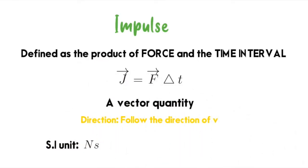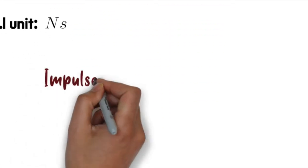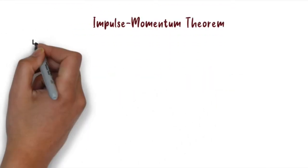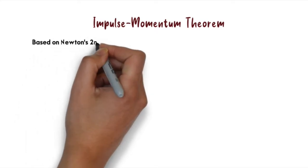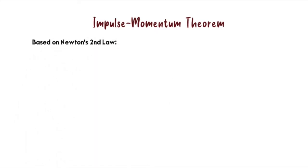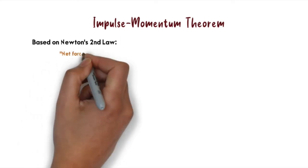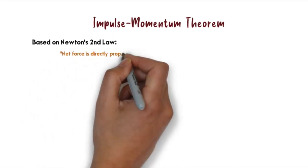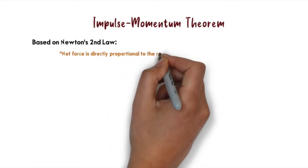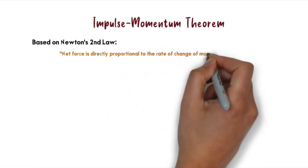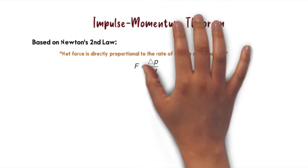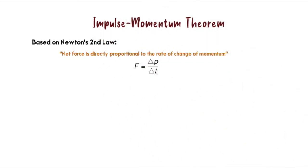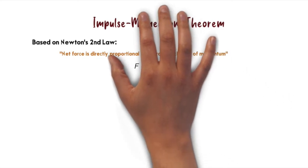We're done talking about impulse and momentum separately. Now we combine them: the impulse-momentum theorem. Based on Newton's second law, the net force is directly proportional to the rate of change of momentum, expressed as F = ∆p/∆t.